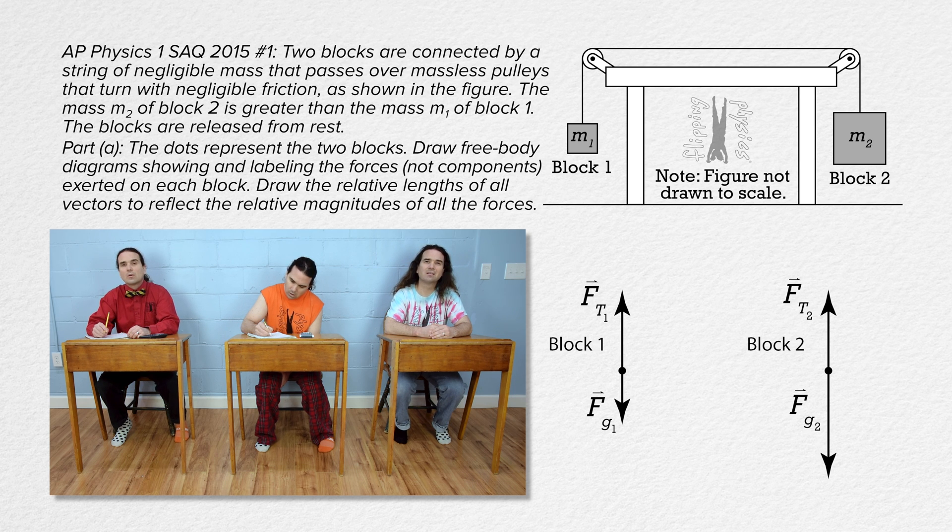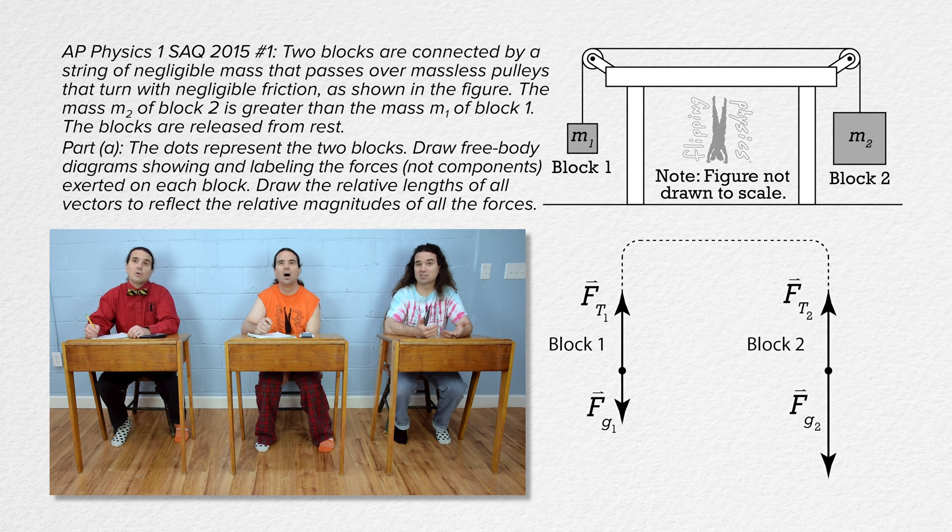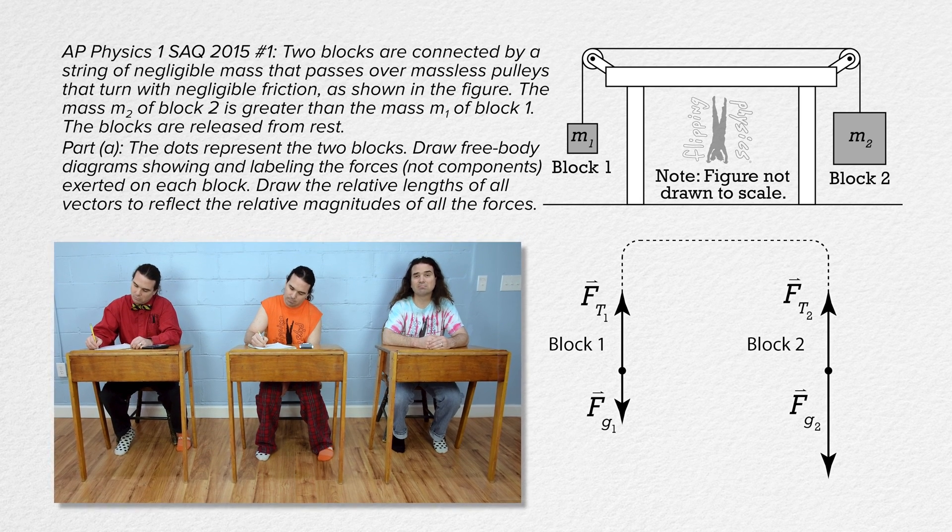And because they are two ends of the same string and both pulleys are massless and frictionless, those two forces of tension are equal in magnitude and need to have the same length arrow. That is the complete free body diagram. Correct.